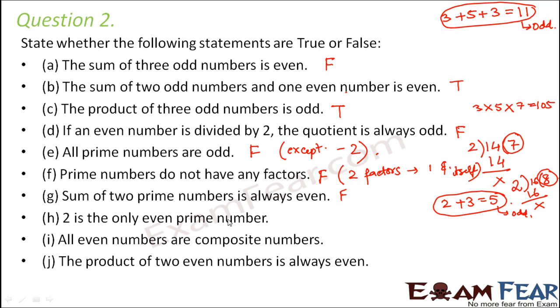2 is the only even prime number. Yes that is true. Except 2 all other prime numbers are odd.